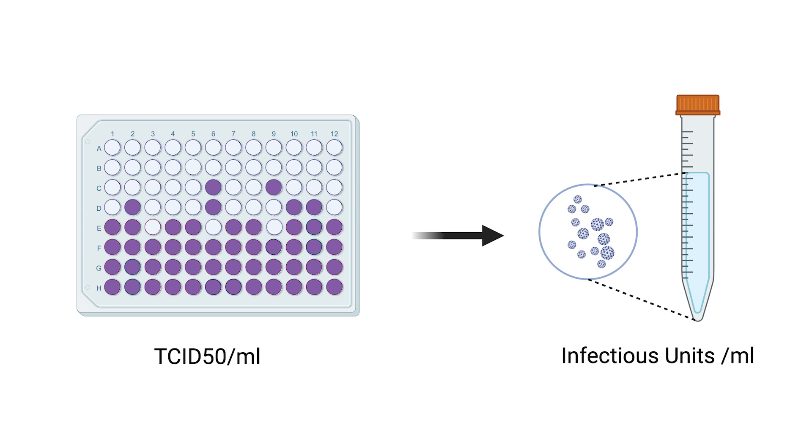Now let's discuss how to convert TCID-50 values into a more direct count of virus particles, commonly known as infectious units. This conversion will give us a clearer picture of the actual number of particles capable of causing infection in each milliliter of our sample.